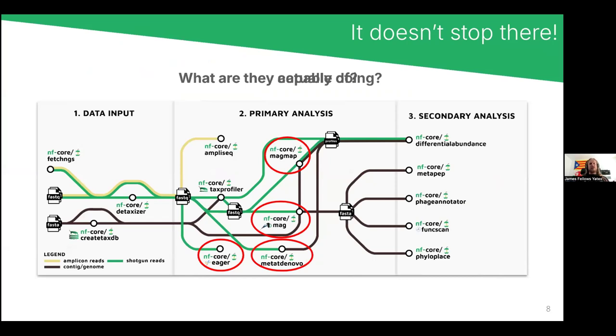Of course, this is not limited to these pipelines. These are the ones we've identified as being the most relevant. So already at data input, we have a variety of more generic pipelines, such as fetchNGS and detaxizer, that are not directly relevant to metagenomics, as in they can also be used in other contexts, but they're very useful for us. We also have this upstream pre-processing pipeline, which is the createTaxDB to create the databases for our primary analysis, which is typically who is there. This includes pipelines such as MagMap, Mag, MetaDenovo, and Ego. And this all covers the primary analysis. So typically, who is there, what are they doing, or the general whole metagenome approach.